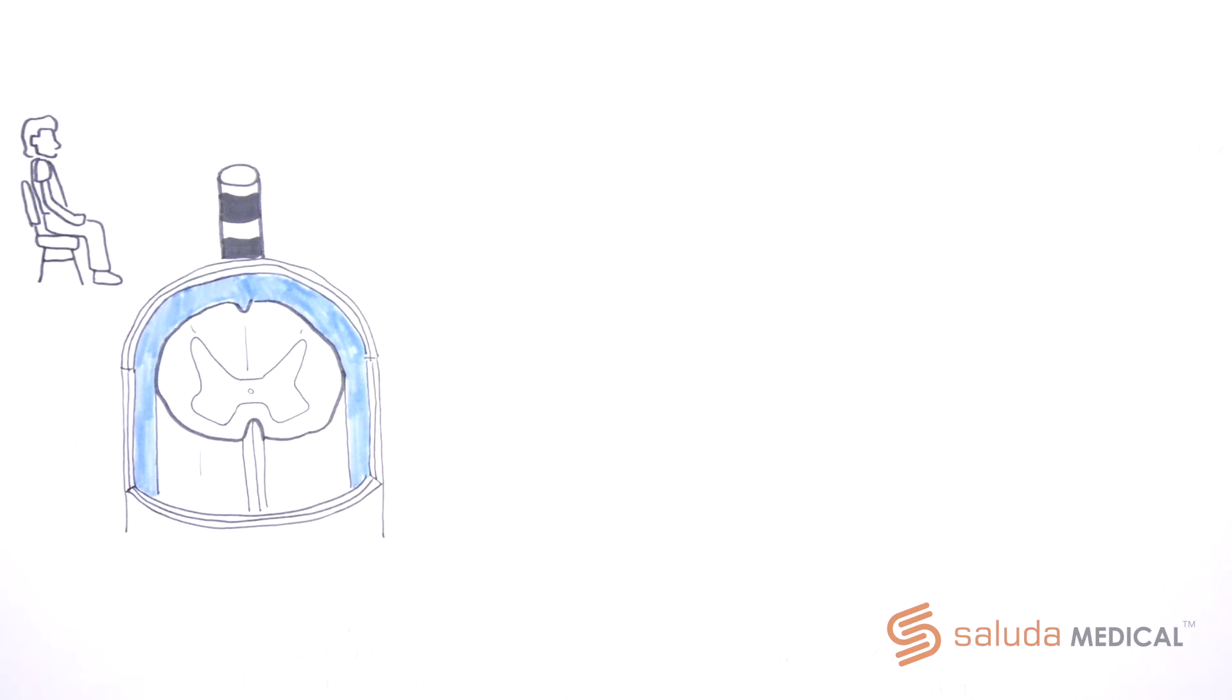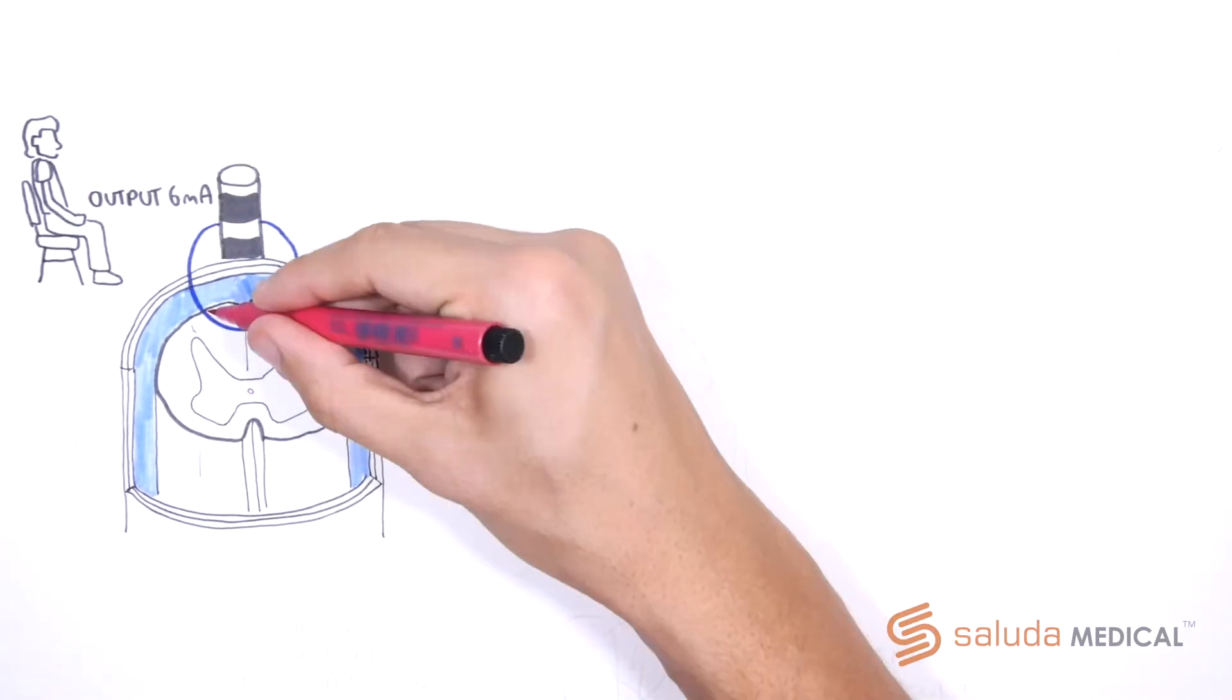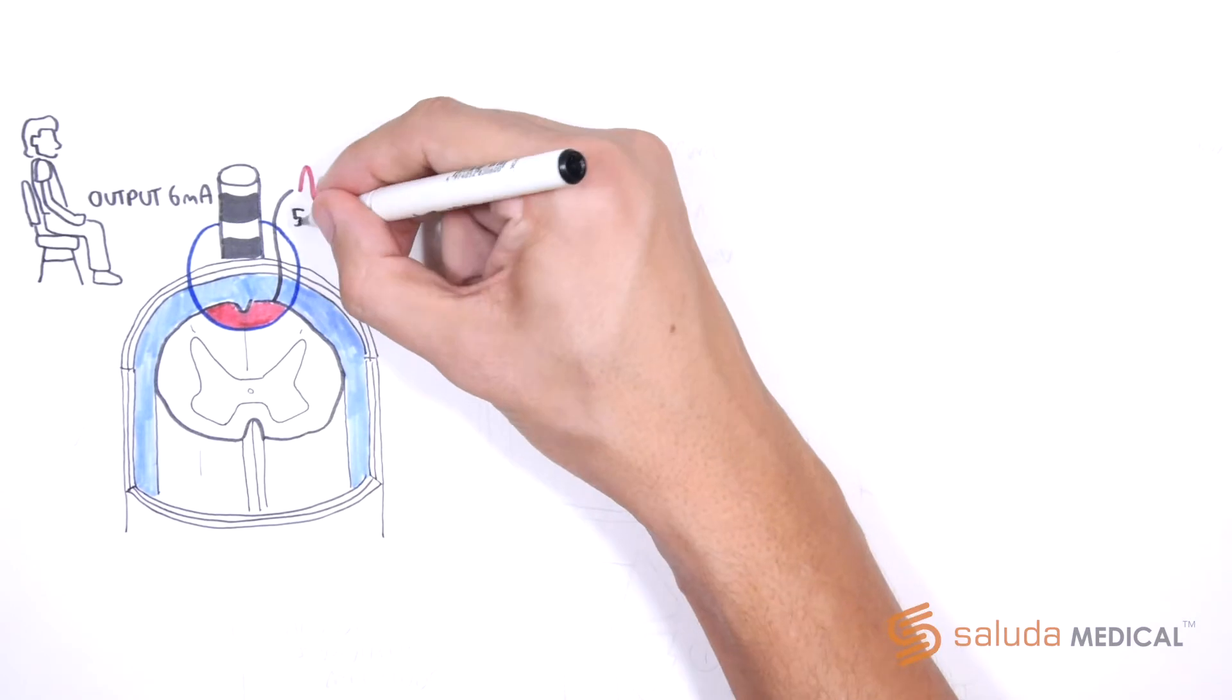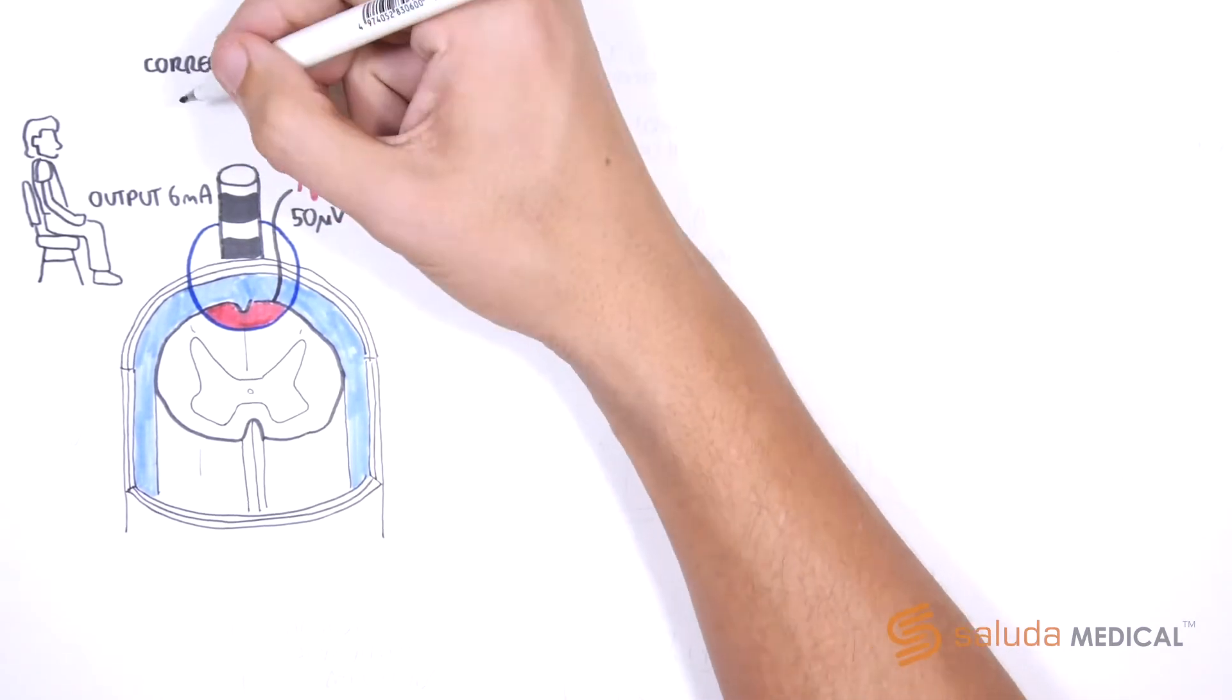Spinal cord stimulation systems with a constant stimulation amplitude are referred to as fixed output open loop systems. In this fixed output spinal cord stimulation example, we see that with a patient seated, the 6mA pulse is generating the desired ECAP amplitude of 50 microvolts.